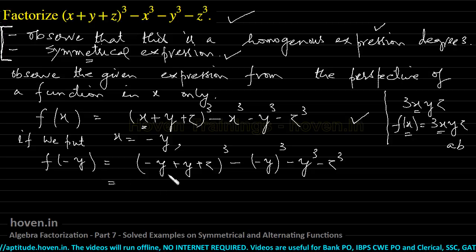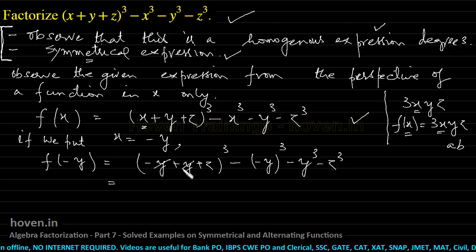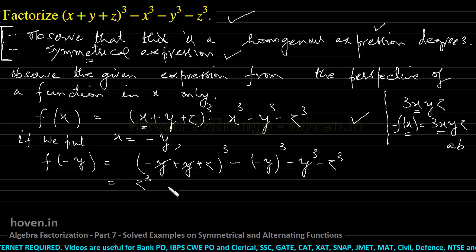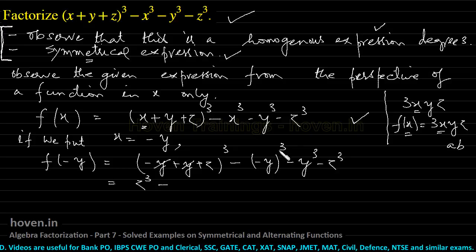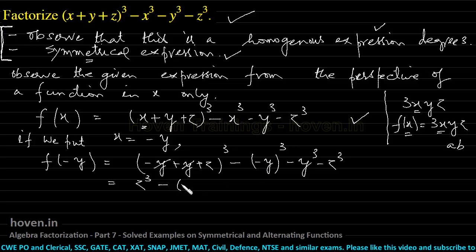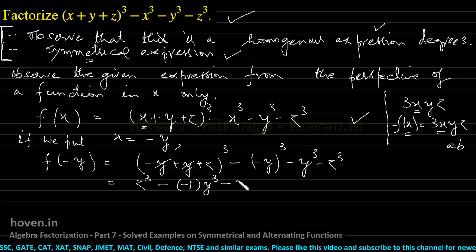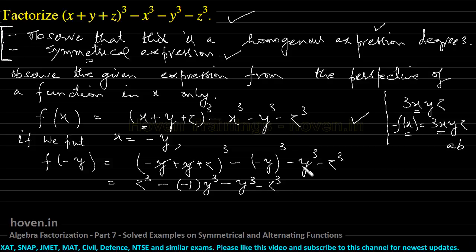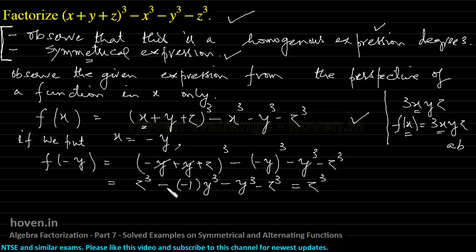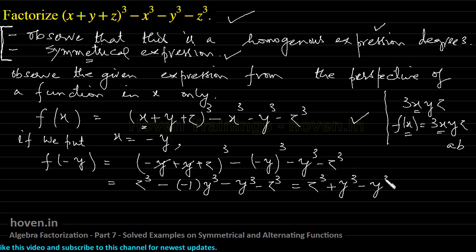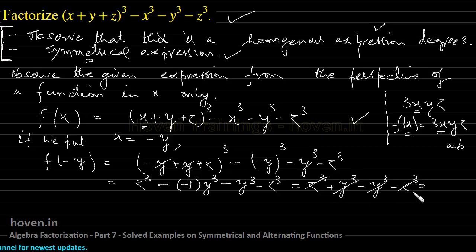Let us evaluate the value of this expression. The minus y and plus y cancel out, so we get z³ here. And (−y)³ becomes minus y³. So we have z³ plus y³ minus y³ minus z³ — they all cancel out. So I get 0.